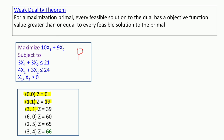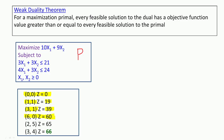We try to increase and find better values of the objective function. For (3, 1): 3×3+3=12 ≤ 21 and 4×3+3=15 ≤ 24, so it is feasible with value 30+9=39. For (6, 0): 6×3=18 ≤ 21 and 6×4=24 ≤ 24, so it is feasible with value 60.